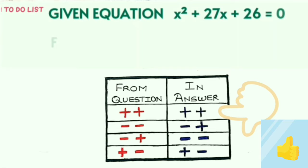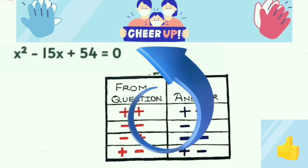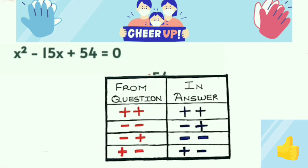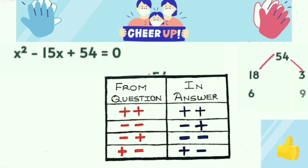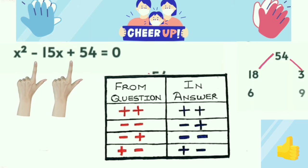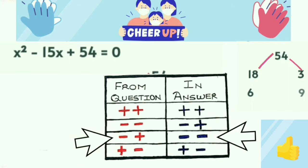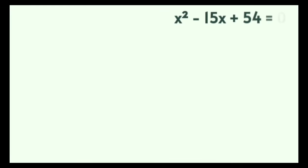Now let's solve the pending equation x squared minus 15x plus 54 equals 0. The factors of 54 we will use are 9 and 6. Referring to the table, the signs in the question are minus and plus, and the corresponding signs in the answer column are minus-minus. So we apply minus to 9 and minus to 6, giving: x squared minus 9x minus 6x plus 54 equals 0.